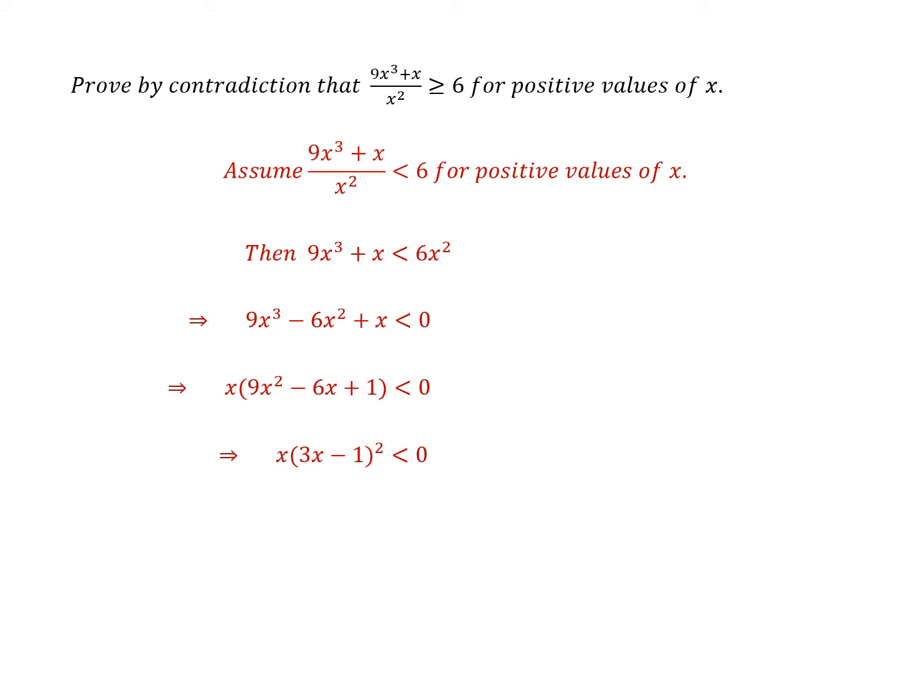So there we have it. If 9x cubed plus x is less than 6x squared then this happens. But remember that we're talking about positive values of x here. So if x is positive then this expression must be greater than or equal to zero.